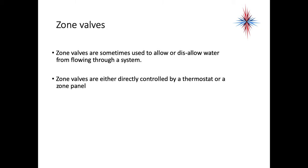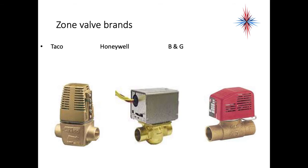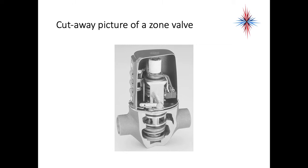Zone valves allow or disallow water from flowing through a system, controlled by a thermostat or zone panel. Brands include Taco, Honeywell, and BNG. When a thermostat calls for heat, the zone valve opens and allows the circulator to run water through the appropriate space. Inside, a heat motor pulls or pushes a plunger to allow water flow. When the set point is reached, the thermostat opens, de-energizing the heat motor, and a spring pushes the valve back closed.